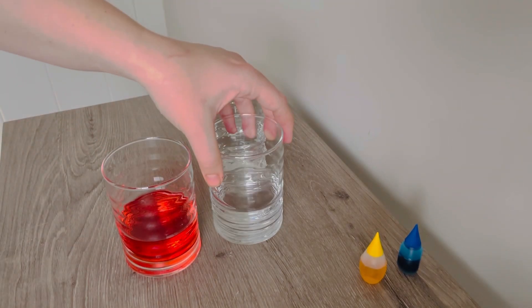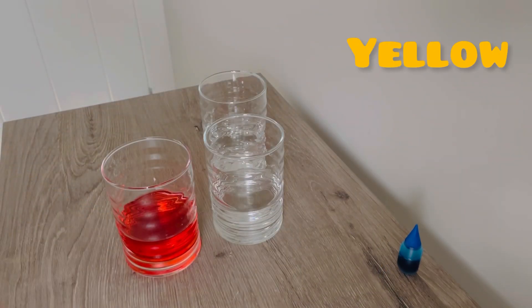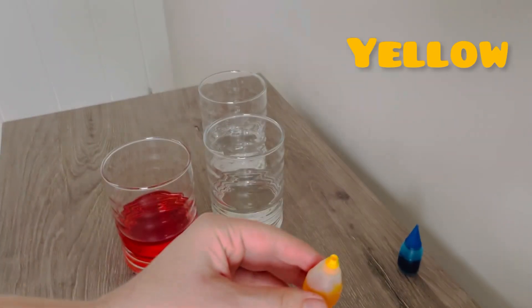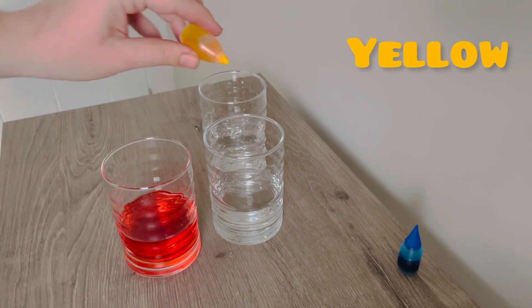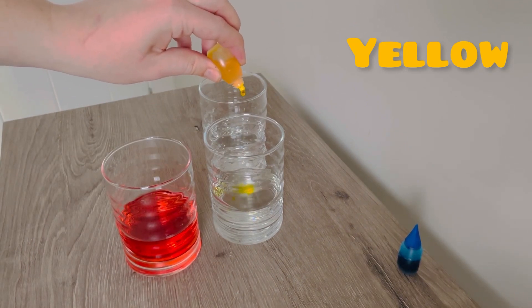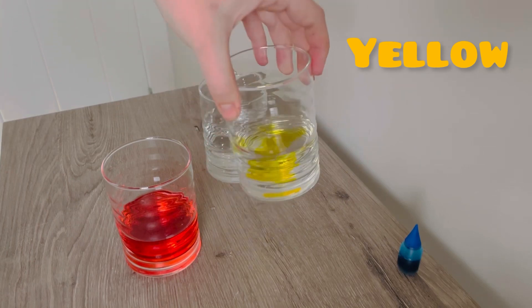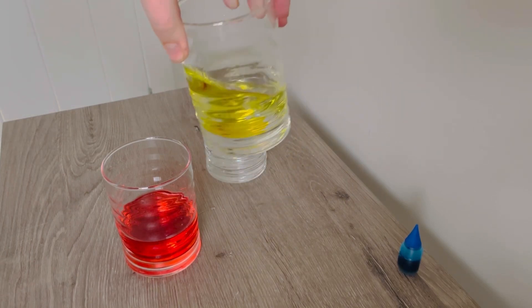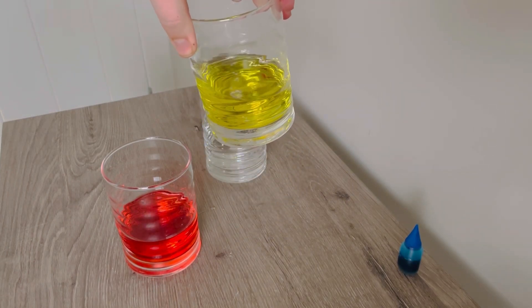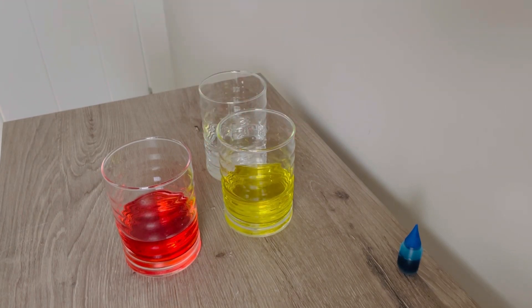Next, we're going to take our yellow food coloring. One, two, three. We're going to mix, mix, mix. Red, yellow.